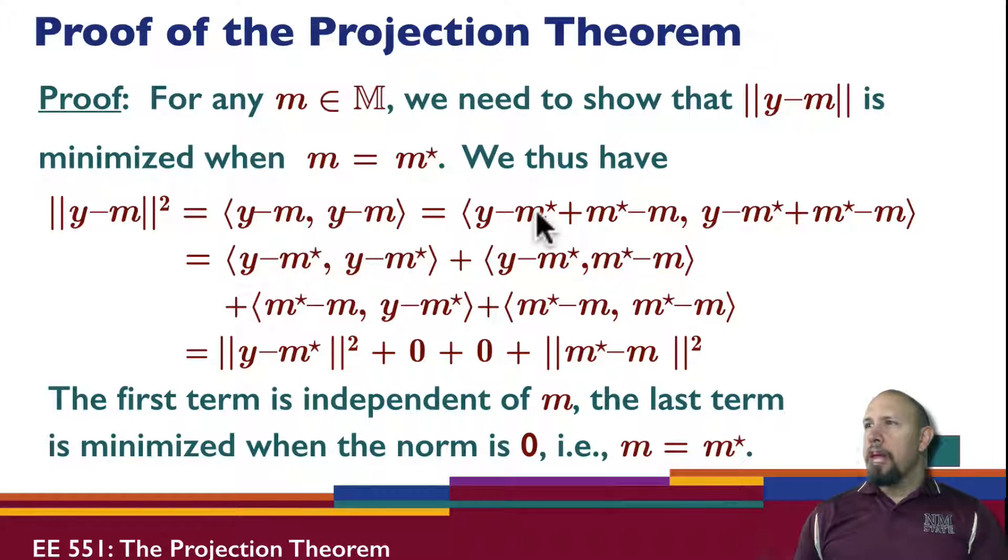And so this quantity now, I can break up into a sum of four inner products. That's like the vector space version of FOIL. So I get y minus m star, inner product with itself, m star minus m, inner product with itself, and then the two cross terms.